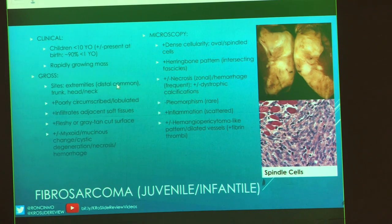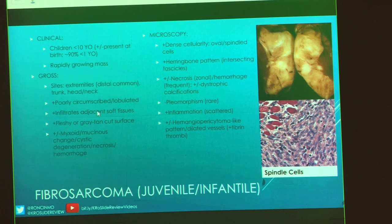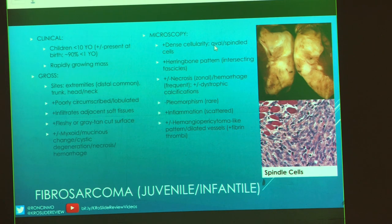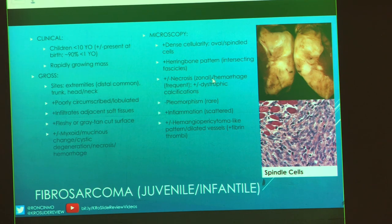It most commonly occurs in the distal extremities — feet, hands, lower legs, forearms — but it can also occur in places like the trunk or head and neck. Overall, this tends to be poorly circumscribed and very infiltrative. Like a lot of these lesions, it appears fleshy or gray-tan. It might be a little myxoid or mucinous. Very dense cellularity, oval to spindle cells, and that herringbone pattern. We don't see necrosis, not a lot of hemorrhage. You shouldn't have prominent pleomorphism throughout the entire lesion.